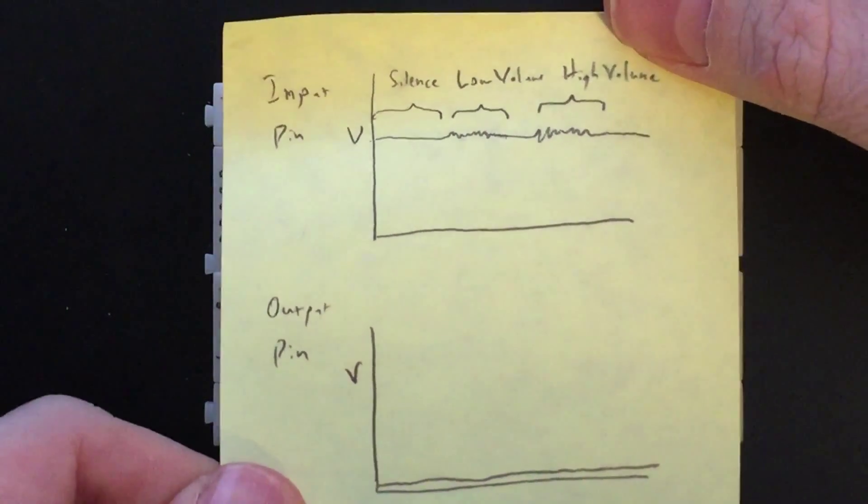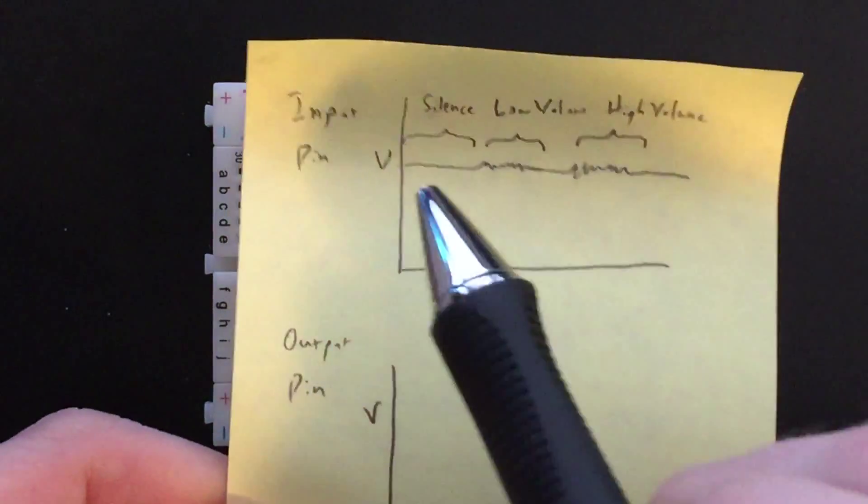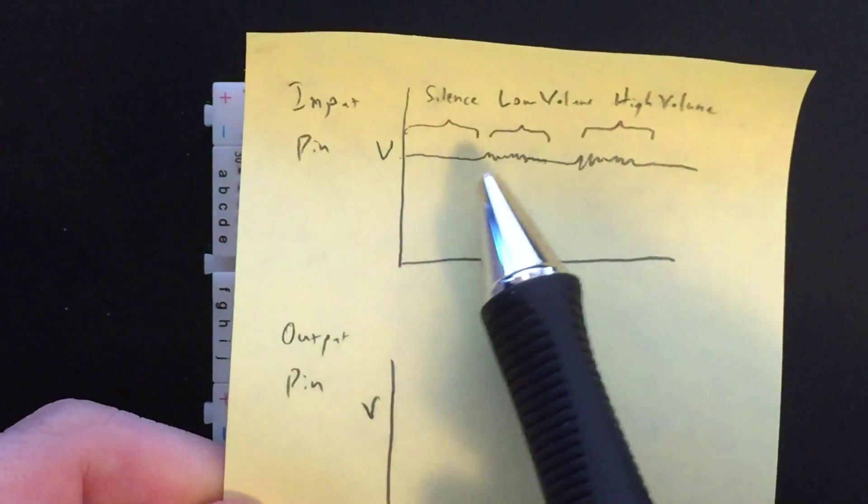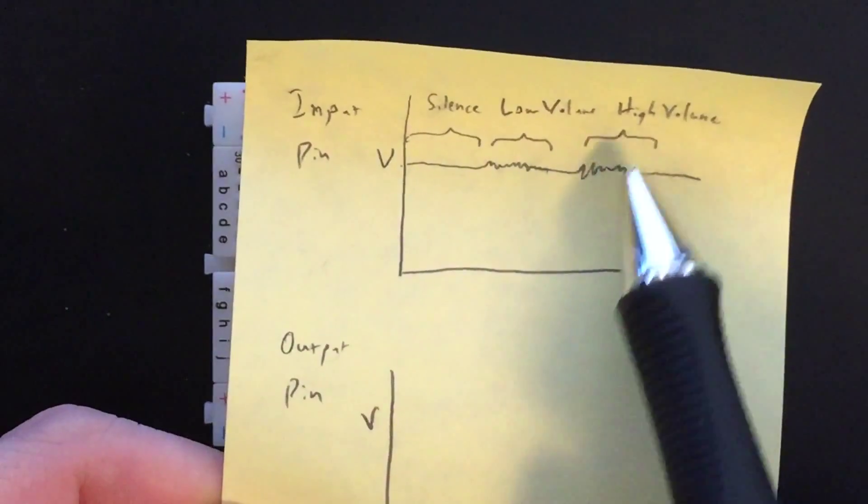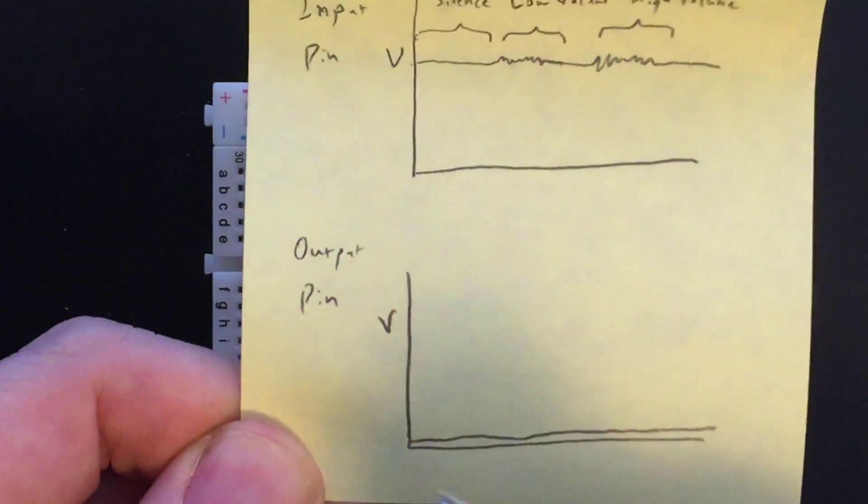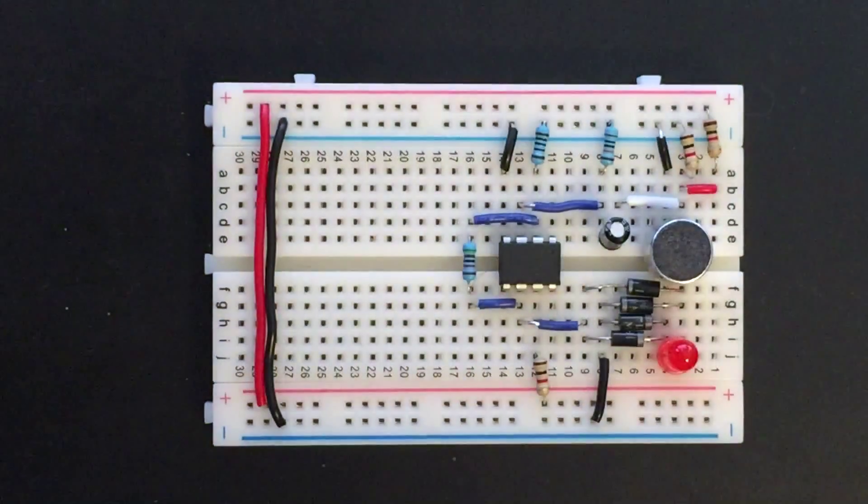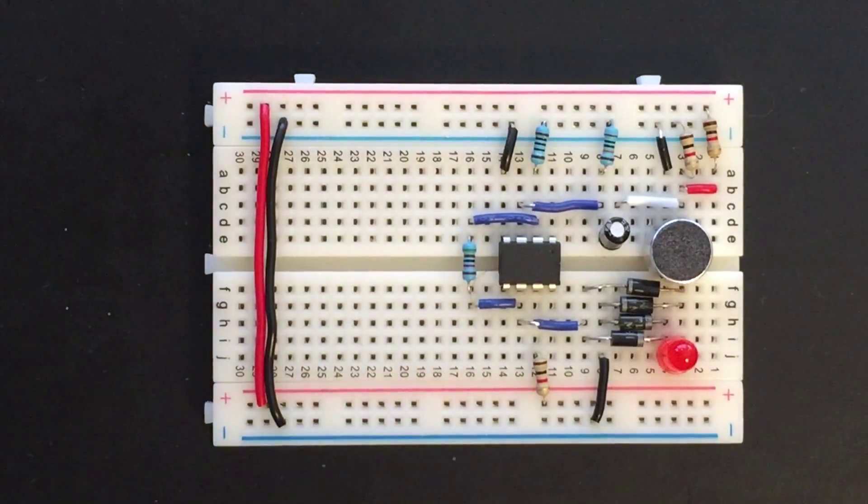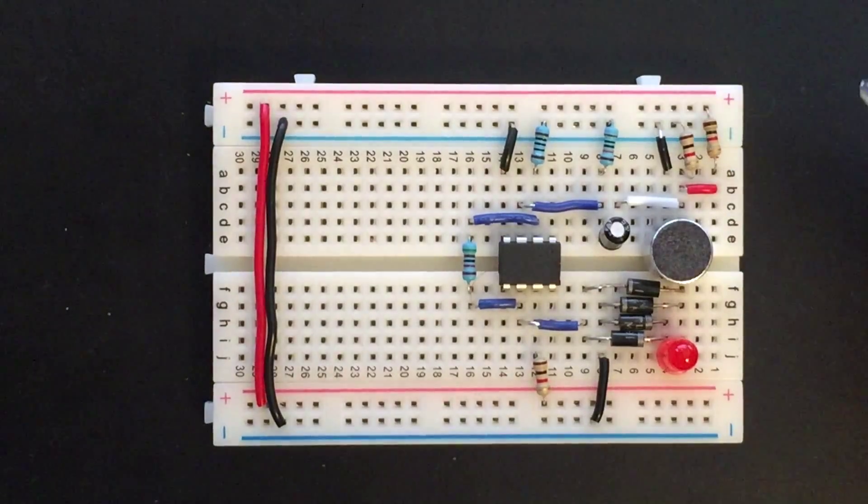Instead, the input voltage remains at this very high level with fluctuation based on the magnitude of the volume that it's detecting, and the output pin voltage remains zero. So this required a little bit of redesign in terms of trying to figure out how to extract that very small signal from the very large input voltage.